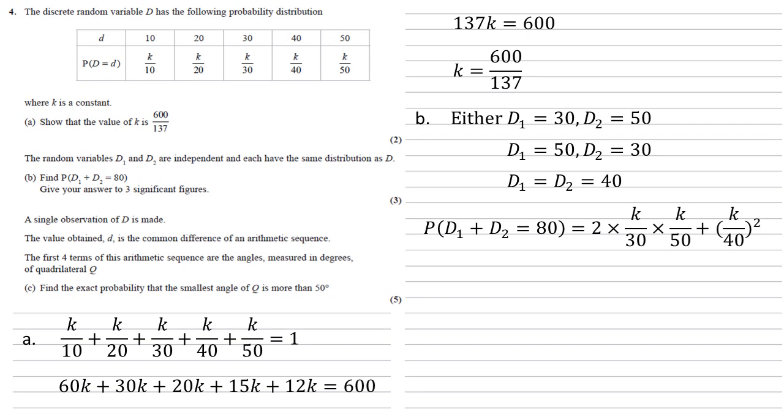The probability of D1 and D2 both equaling 40 is the probability of 40, so K over 40 squared. Now putting our K of 600 over 137 into that expression and solving it on the calculator, we get 0.0376.